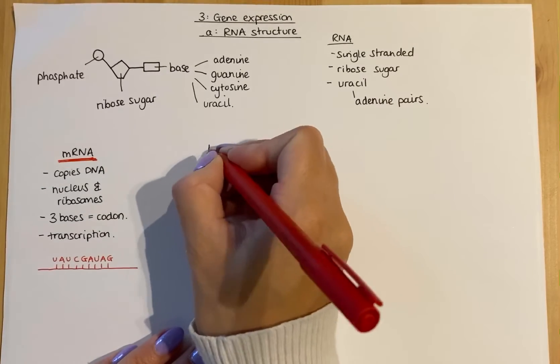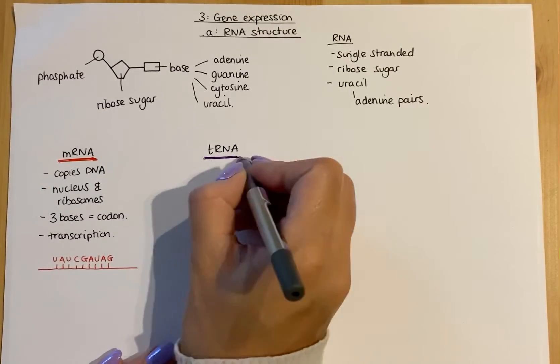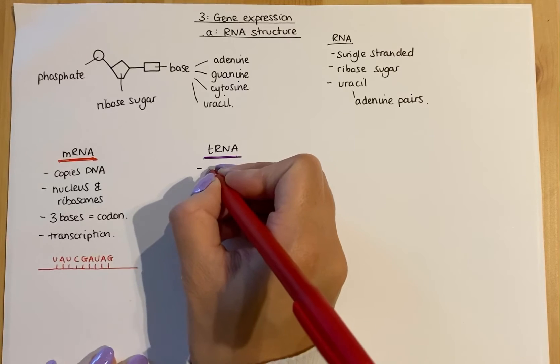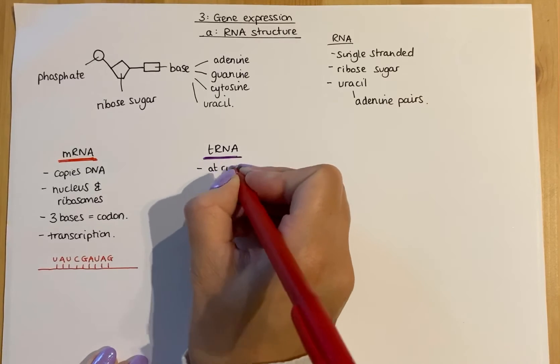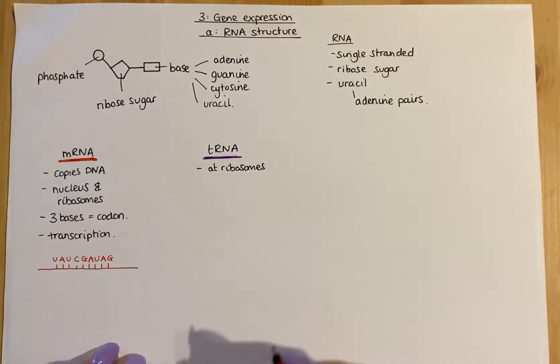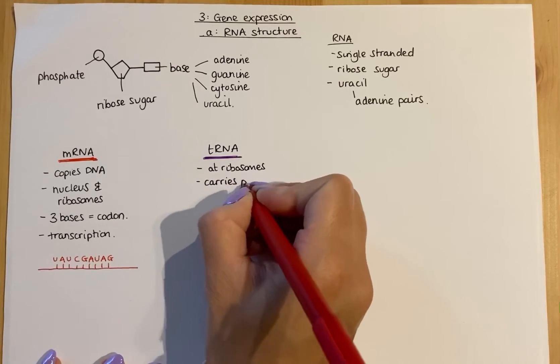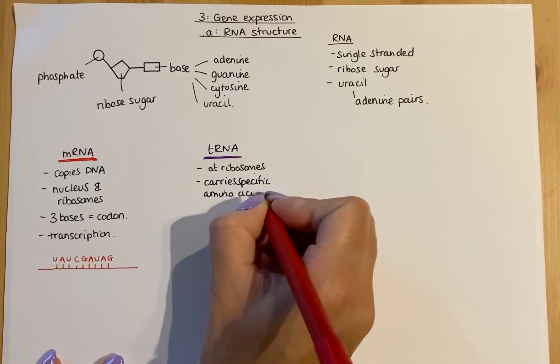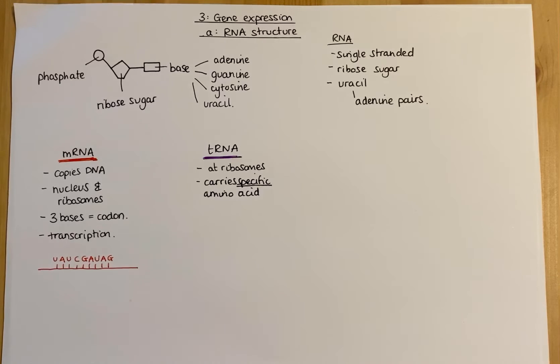The next RNA we need to talk about is tRNA. I'm going to underline this in purple because that's what it will be shown with in the next video. tRNA is single stranded like all RNAs and it's found at the ribosomes and within the cytoplasm. Specifically, it carries a specific amino acid to those ribosomes, and that word specific is really important. One tRNA molecule will only carry one specific amino acid - it would never pick up a different one.